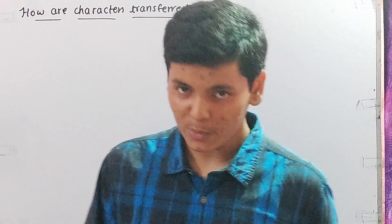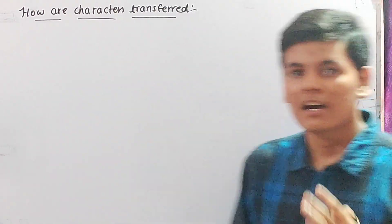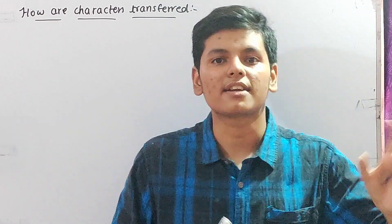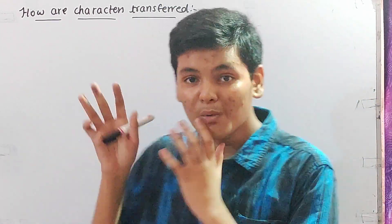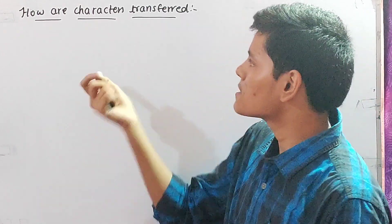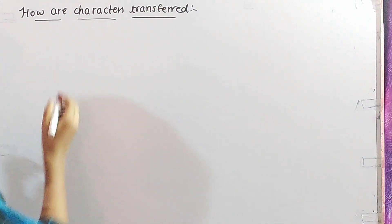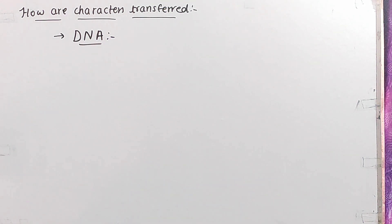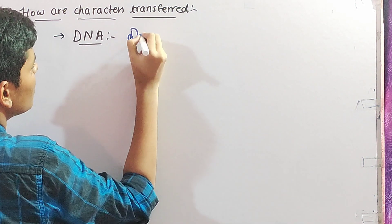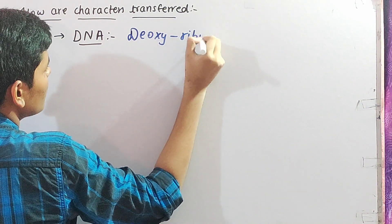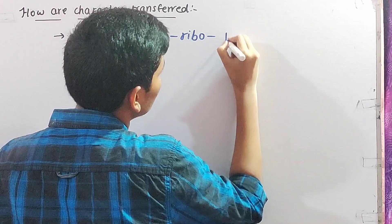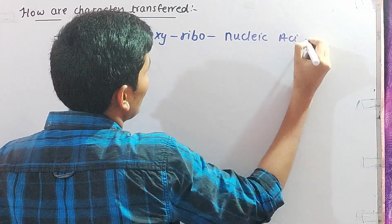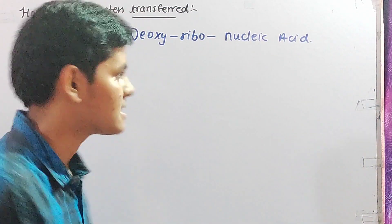Some information is transferred from parents to children. The main question is: how are the characters transferred? They are transferred through something known as DNA — deoxyribonucleic acid. DNA is deoxyribonucleic acid. Before moving on to what DNA is, we have to understand where we find DNA. We find DNA in a cell.